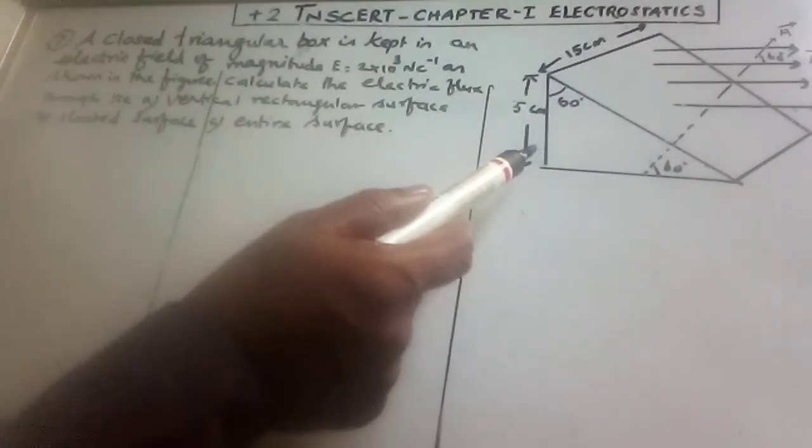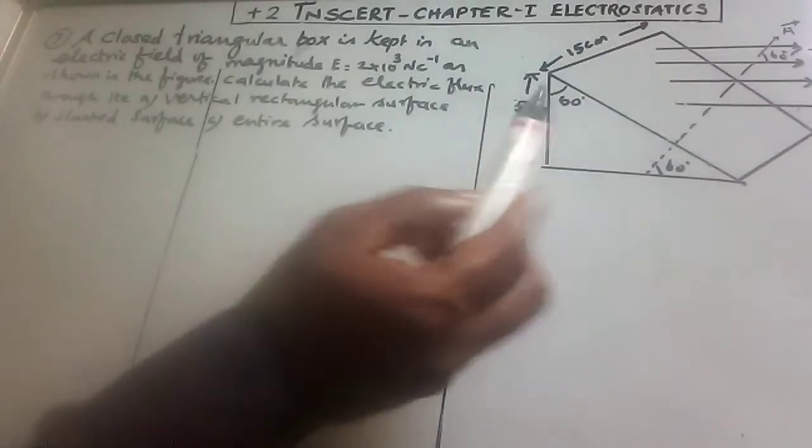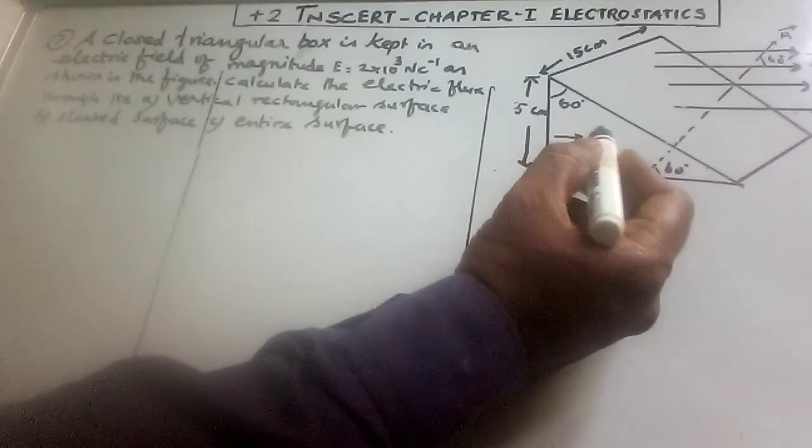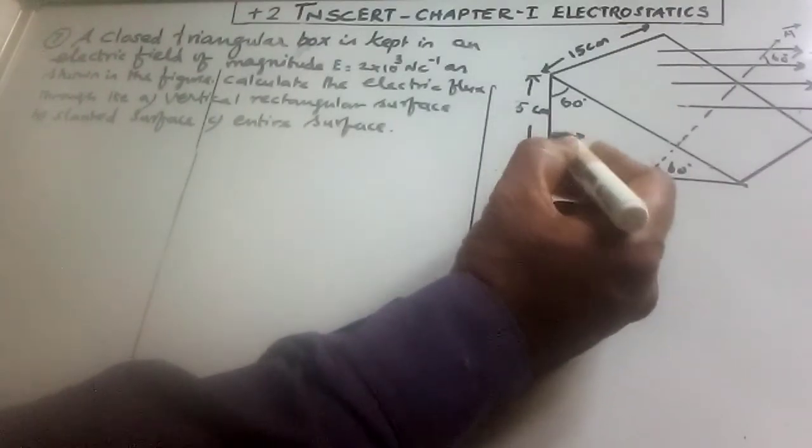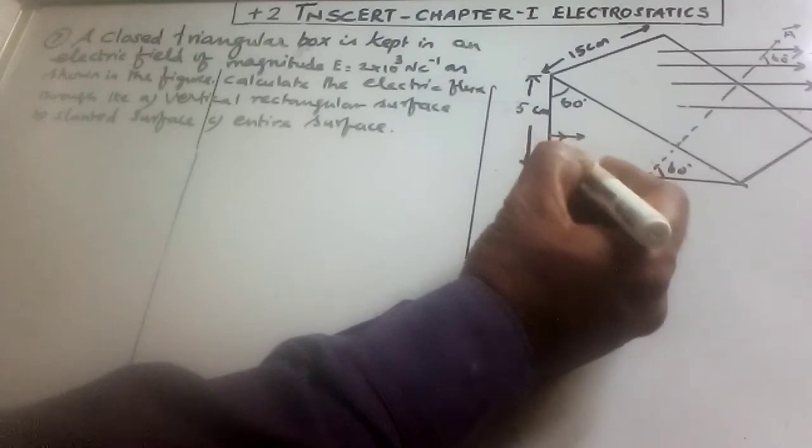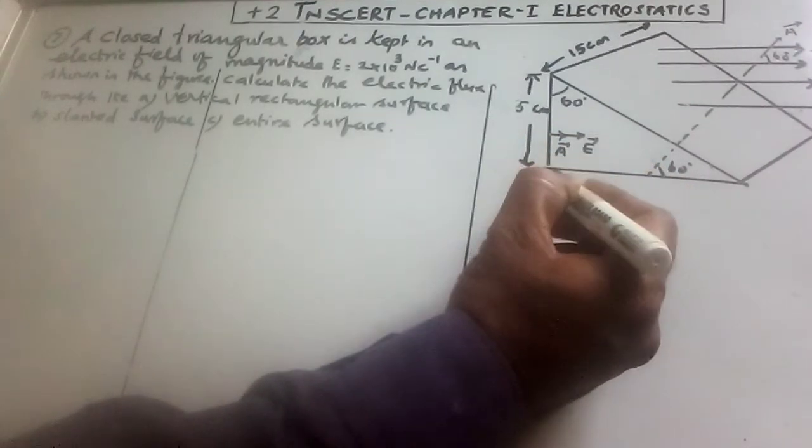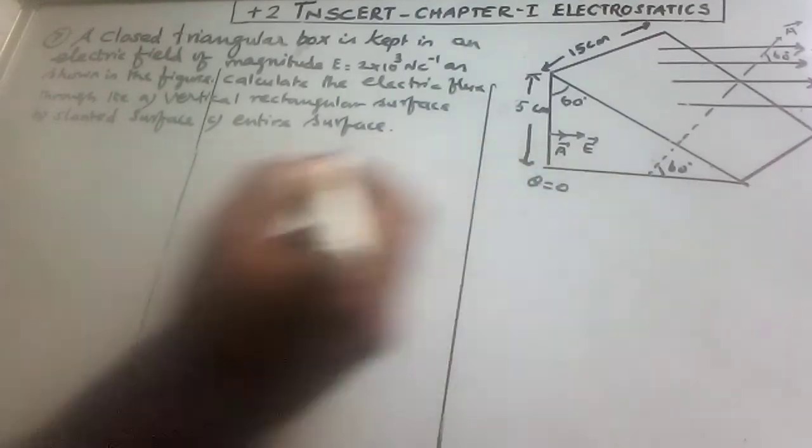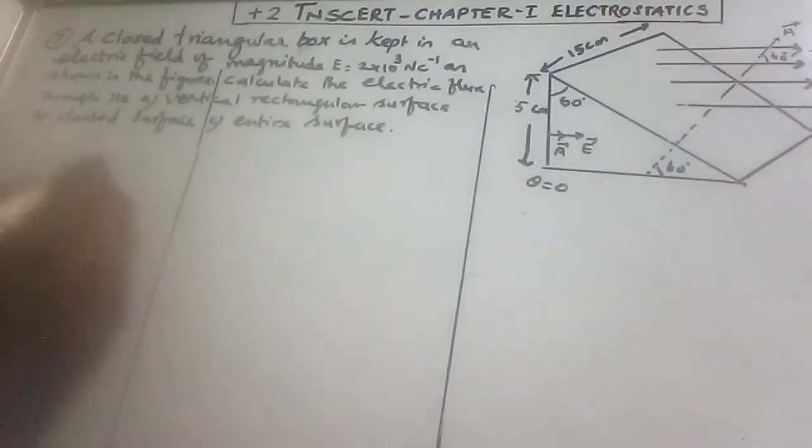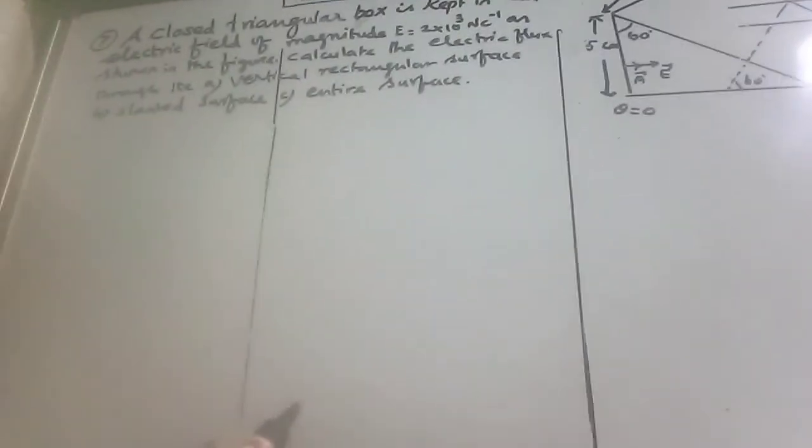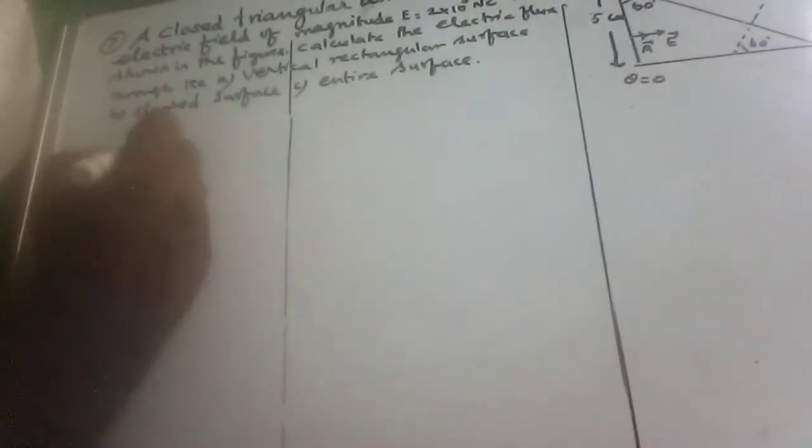On the vertical surface, the electric flux flows through. The electric field is in one direction and the surface area is a vector in that direction, so the angle between these two is theta equals 0. So the flux formula is phi equal to EA cos theta.